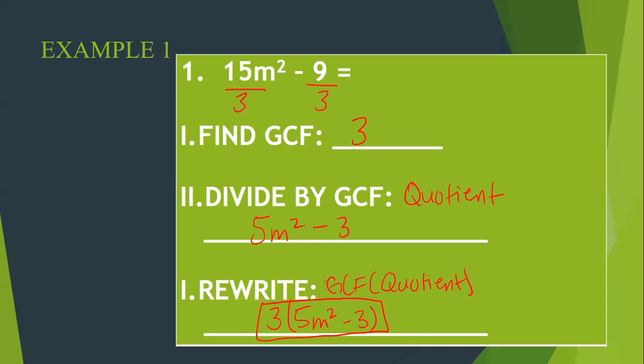Then to factor, you put them together. It's going to be your GCF, parentheses, your quotient. My GCF is three. My quotient is 5m squared minus 3. And that is your answer. You just factored using a monomial, a.k.a. GCF. Was that terrible? Are we good? Can we keep going?